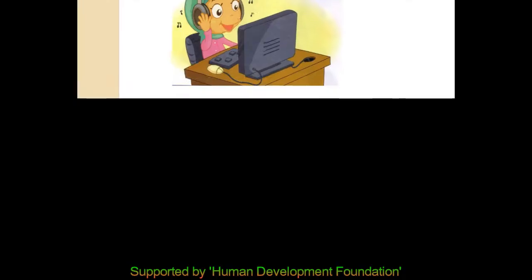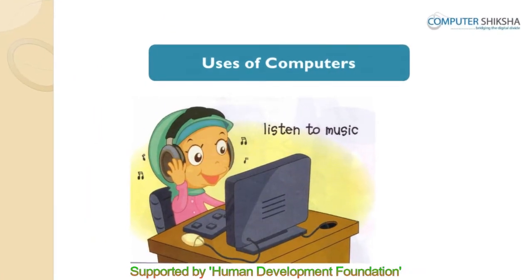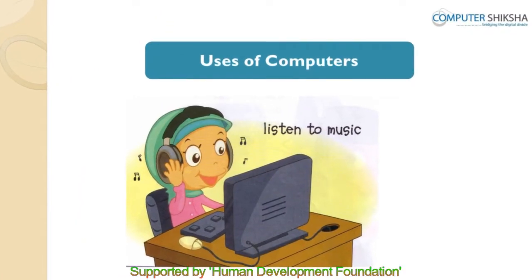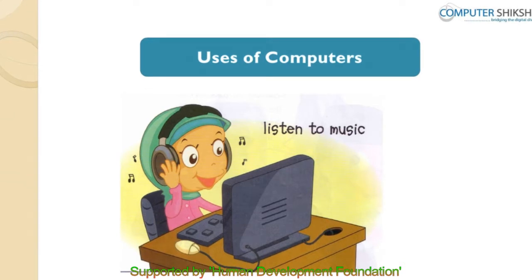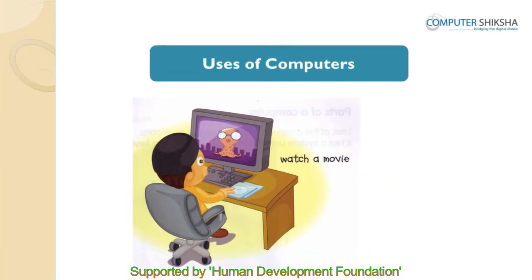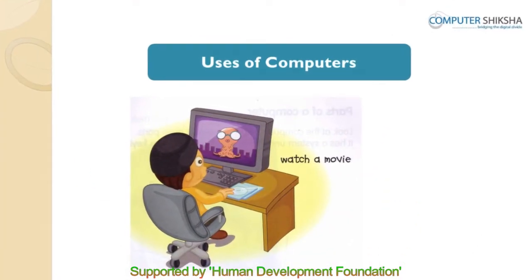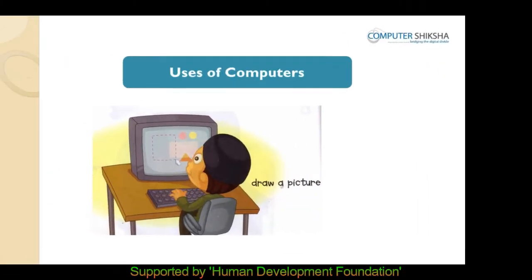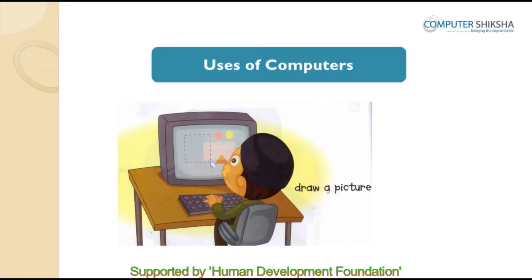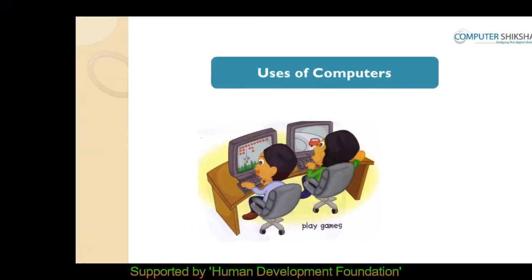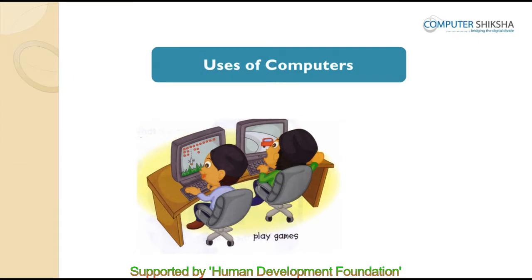So, if you want to listen to a song, use a computer. If you want to watch a movie, use a computer. Want to make a drawing? Use a computer. Want to play some games? Again, use a computer. In this way, we can use the computer for doing different activities.